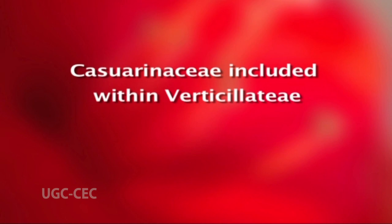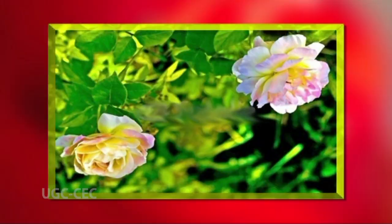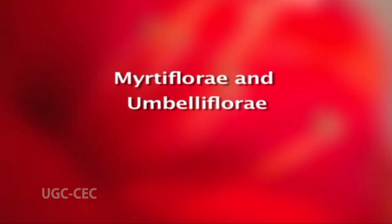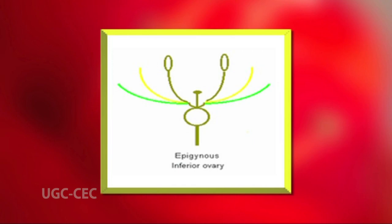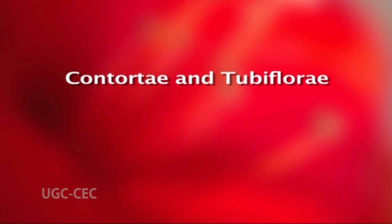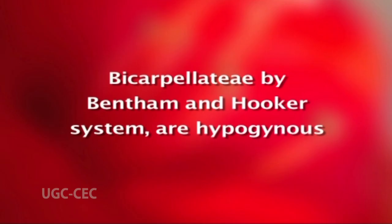Casuarinaceae, included within Verticillatae, is considered primitive on account of cleistogamy. The dichlamydous polypetalous families start with Ranales, in which flowers are spirocyclic or cyclic and hypogynous, and apocarpy is recognized as primitive. The polypetalous orders end with Myrtiflorae and Umbelliflorae, which have epigynous flowers. The Sympetalae includes gamopetalous families and commences with Ericales, Primulales, etc. The orders Contortae and Tubiflorae include families recognized under Bicarpellatae by the Bentham and Hooker system, and are hypogynous.